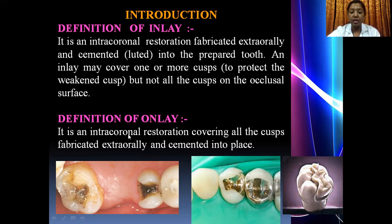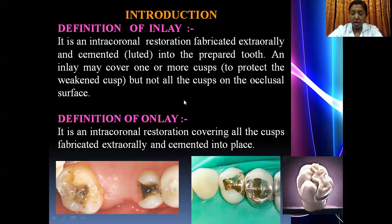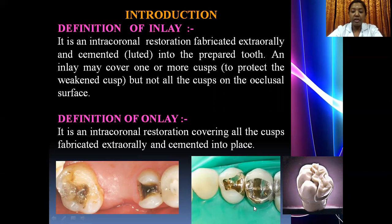Whereas an onlay is an intracoronal restoration fabricated extraorally and cemented onto the prepared tooth. It is designed to cover all the cusps on the particular tooth. If you see the picture here, this is an example of a class 2 inlay, and this is a picture of an onlay with the ceramic facing, covering all the cusps on the occlusal surface.